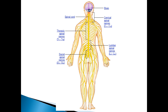We can divide our spinal cord into four main areas: the cervical spinal nerves C1 to C8, the thoracic spinal nerves T1 to T12, the lumbar spinal nerves L1 to L5, and the sacral spinal nerves S1 to S5. Each of these areas is responsible for commanding and receiving information from specific areas in the body.